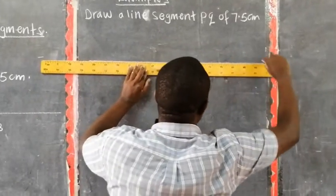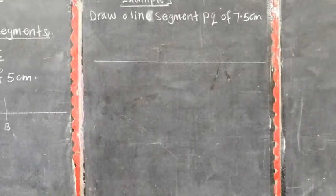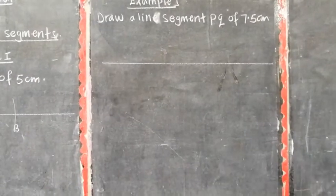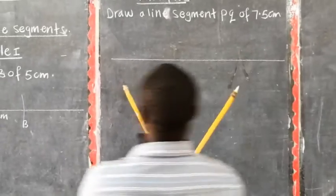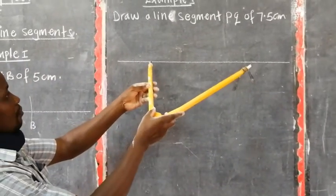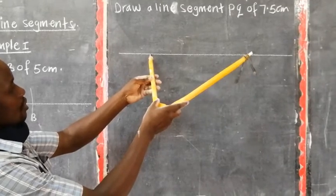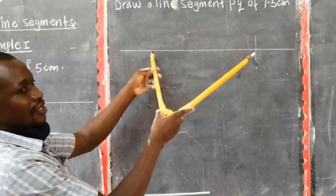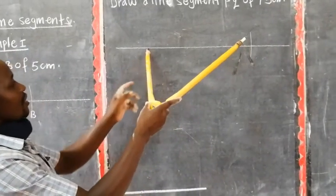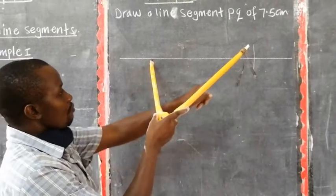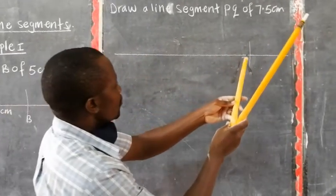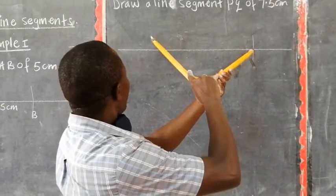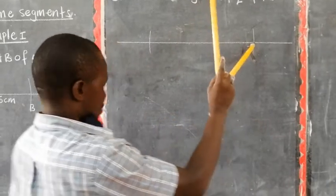When you draw a line, you draw it once so that it can be neat. Now get your compass which is having 7.5 centimeters. Put this side and make this side an arc. Then change, put the needle on the other side and also draw this side where you have been standing.